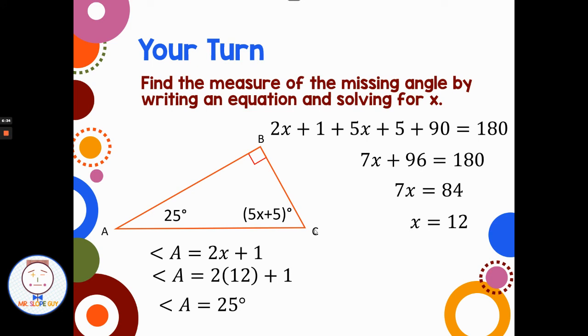Then we can look at angle C. Angle C was 5x plus 5. I can replace x with 12. 5 times 12 is 60 plus 5 is 65. So angle C is 65 degrees. And we can go back and double check: 90 plus 65 plus 25 adds up to 180.